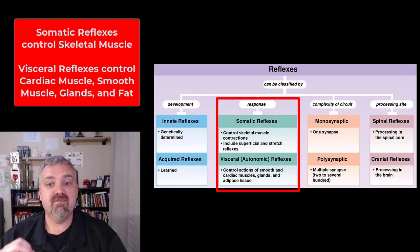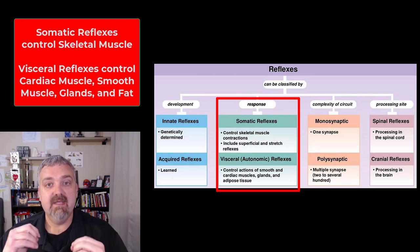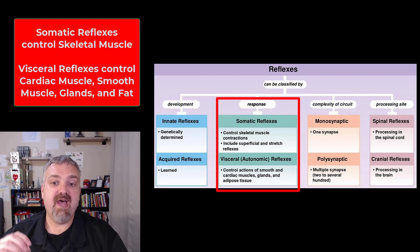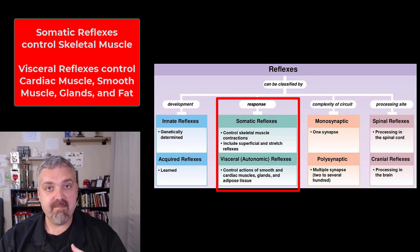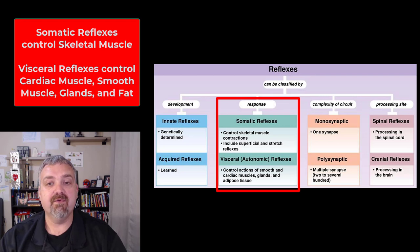Then we have somatic versus visceral reflexes. Somatic means body — somatic reflexes control skeletal muscle. Visceral or autonomic reflexes control cardiac muscle, smooth muscle, glands, and fat. We'll talk about that more with the autonomic nervous system.